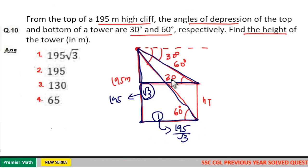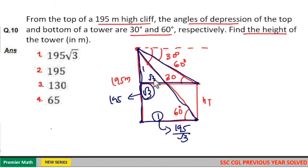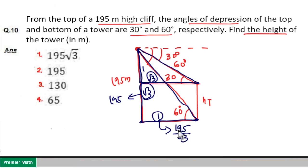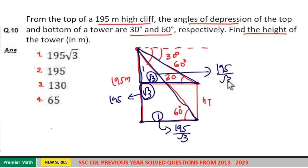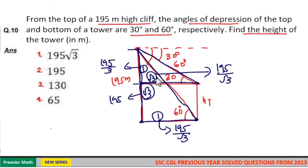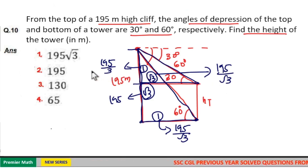From the smaller triangle, tan 30° equals opposite over adjacent, so opposite and adjacent sides are in the ratio 1 to root 3. The root 3 part we already found is 195 divided by root 3. So this root 3 part equals 195 by root 3, which means this one part equals 195 divided by 3, that is 65.